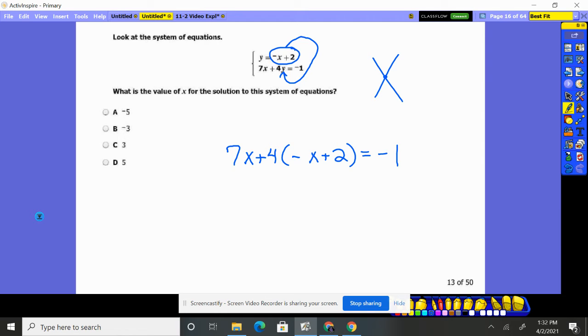Now I've got to solve it. 7x, distribute that through. That'll be minus 4x, positive 4 times positive 2, positive 8, equals negative 1. 7x minus 4x is 3x, plus the 8 is negative 1.